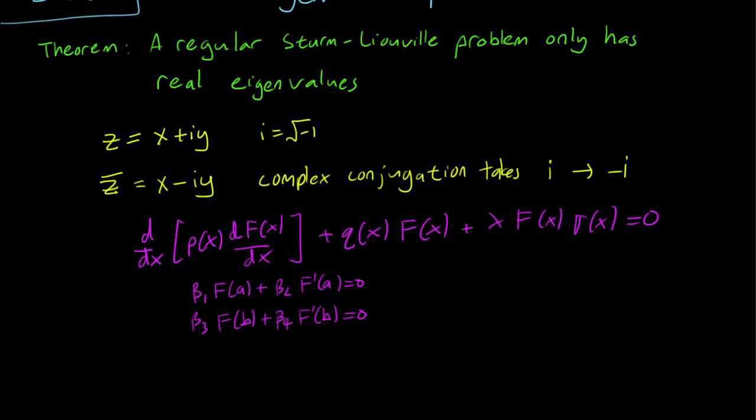So this is our regular Sturm-Liouville problem. It consists of an equation and some boundary conditions. Lambda here is an eigenvalue and f is the corresponding eigenfunction. Remember that for a regular Sturm-Liouville problem, we have a few conditions. In particular, px, qx and sigma x are all real functions. And also, all the betas are real.